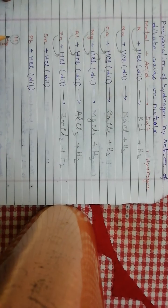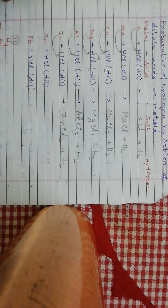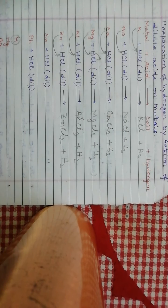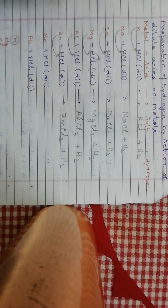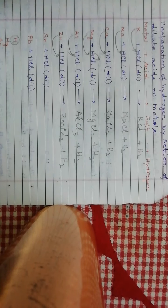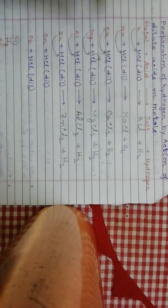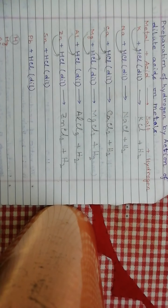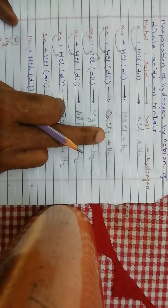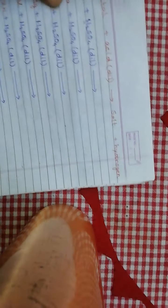The metals which are below hydrogen in the activity series do not produce hydrogen gas when they react with dilute acid — not only hydrochloric acid, but sulfuric acid as well. The three most active metals at the top are extremely reactive, so their reaction would be explosive. That is why we do not use those metals to produce hydrogen in our laboratory.